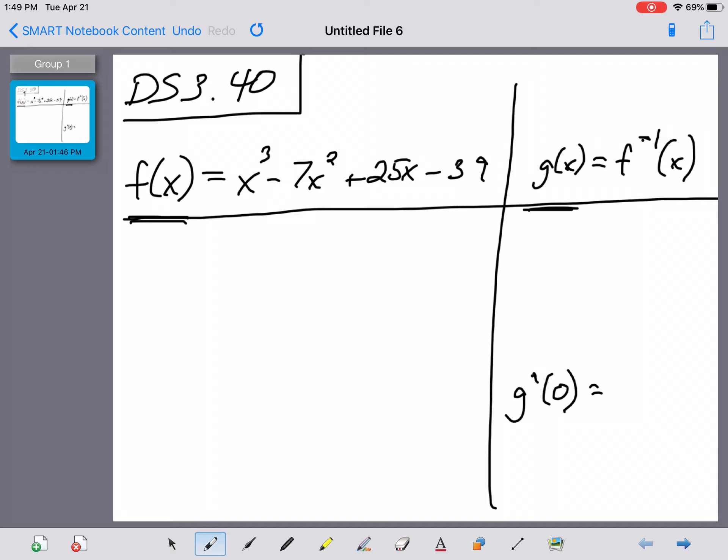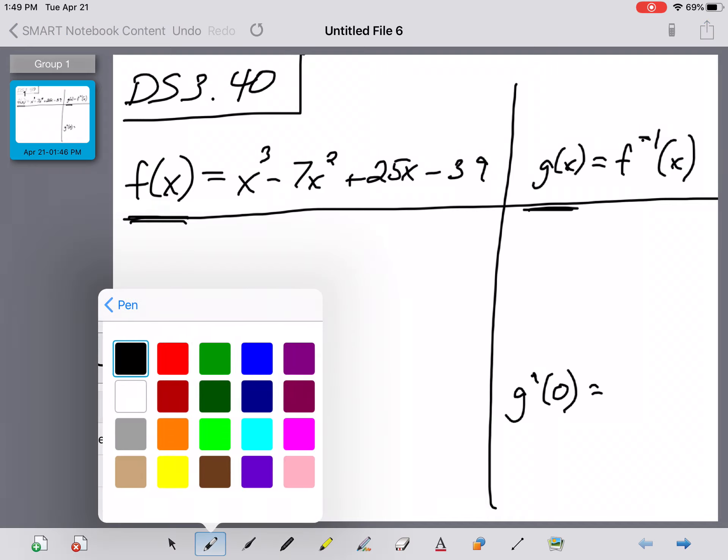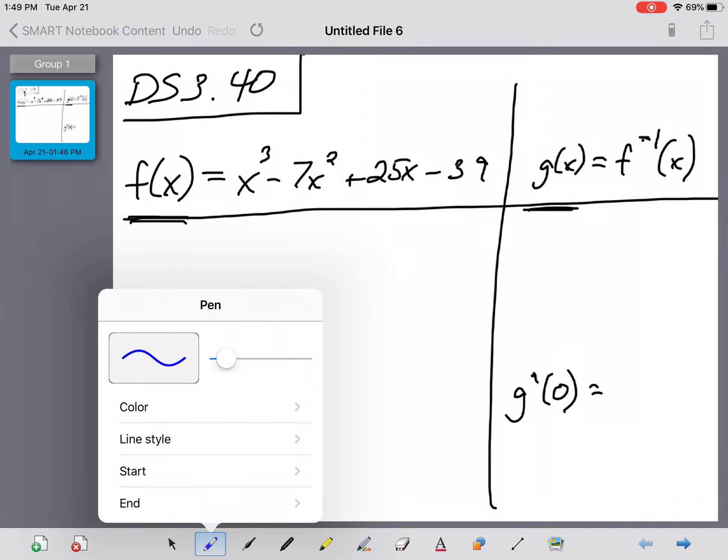If you remember the way that we did this, the most important thing that we tried to do first was figure out the ordered pair in question. Now, since we're trying to find the value of g prime of 0, that means that over here on the g side, 0 is our x value, and we're trying to figure out the y value that goes with it.